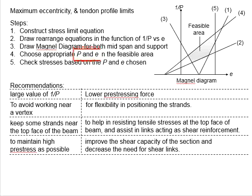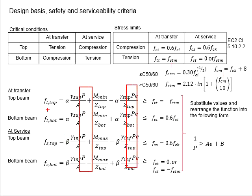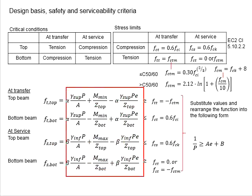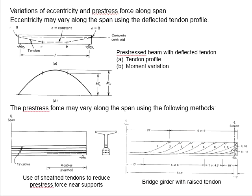This leads to a situation where you have one set of P and e at the midspan and another set at the support. Since the stress in the member can be manipulated by both P and e, adjusting P will affect the stress, and similarly adjusting e will also affect the stress. Normally a designer has the flexibility to adjust P and e so that stresses come within the allowable limits for compression and tension.